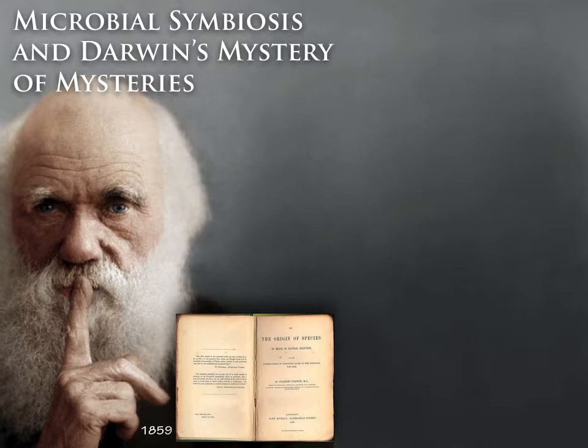What we are going to talk about today is microbial symbiosis and animal speciation. I want to start with a little bit of history. Darwin wrote The Origin of Species in 1859. It was largely a theory based on observations in the animal and plant world. Microbes weren't incorporated in any way into the foundation of evolutionary biology.